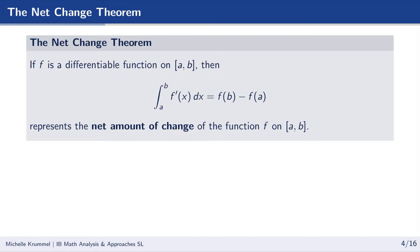In general, that brings us to the net change theorem. If f is a differentiable function on a closed interval from a to b, then the integral of f prime of x dx from a to b is equal to f of b minus f of a. This represents the net amount of change of the antiderivative function f on the interval from a to b. When you integrate a rate of change, you get a net amount of change.